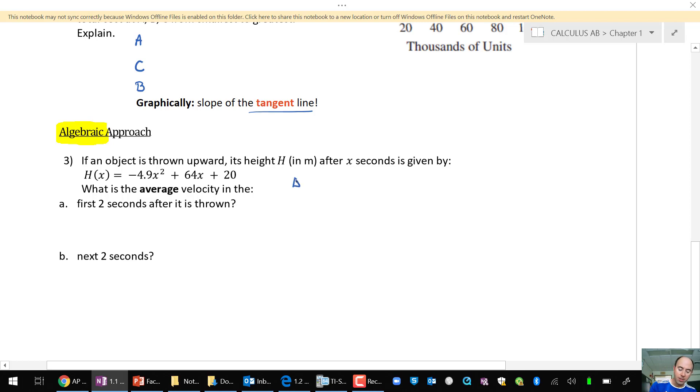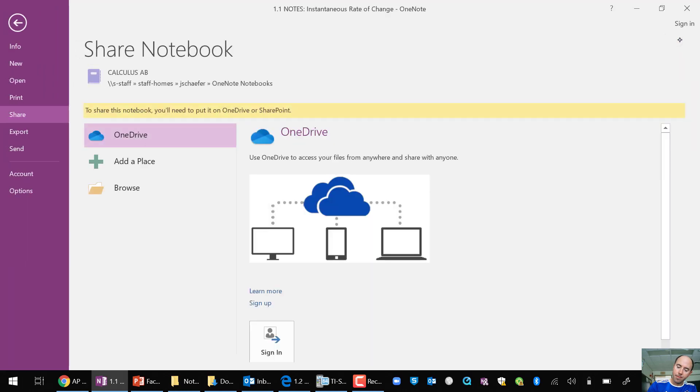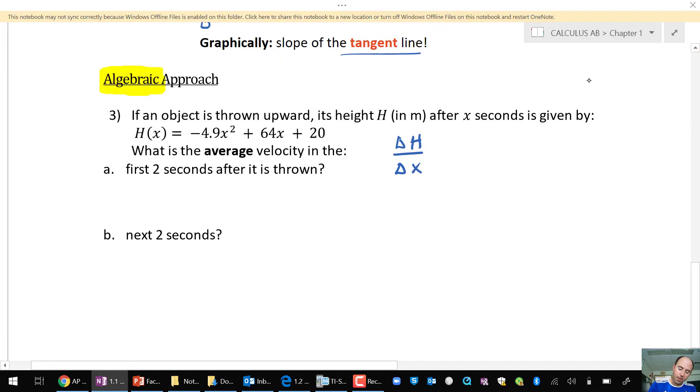Now average velocity is going to be the change in height divided by the change in time, x seconds. So the first two seconds after it is thrown, that would simply be H of 2 minus H of 0, all divided by 2 minus 0. That would be the average velocity between the first two seconds.